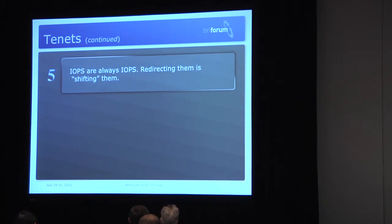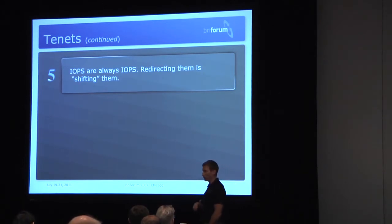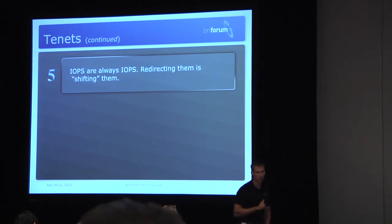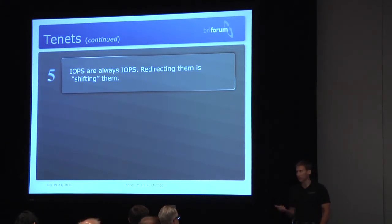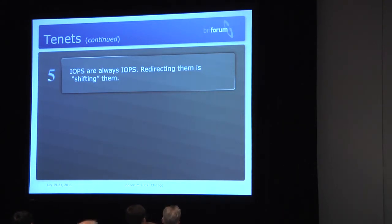IOPS are always IOPS — redirecting them is not the same as eliminating them. A lot of people say let's redirect application data or a folder, and that'll solve the VDI IOPS problem. But no — you just redirected that problem somewhere else. PVS reduces IOPS because it helps with boot storms, but most people are caching PVS on disk, so all you're doing is shifting those IOPS. When you redirect, you're basically just shifting them.